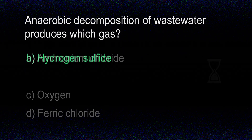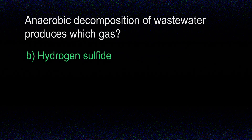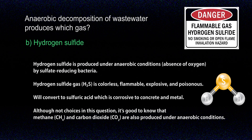The answer is B, hydrogen sulfide. When wastewater is decomposed in an environment without oxygen, a process known as anaerobic decomposition occurs. During this process, specialized bacteria break down the organic matter in wastewater, producing various gases. One of the most common and recognizable gases produced is hydrogen sulfide, also commonly referred to by its chemical formula H₂S. Hydrogen sulfide is a colorless gas with a strong, unpleasant odor, often described as similar to rotten eggs.